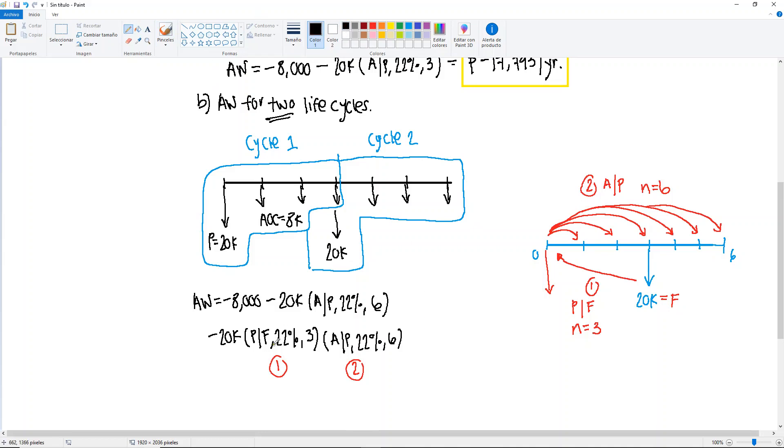And if we solve for all of this, so plug in these two factors, multiply this times this times this, and then the rest, you should get, guess what, minus $17,793 per year.